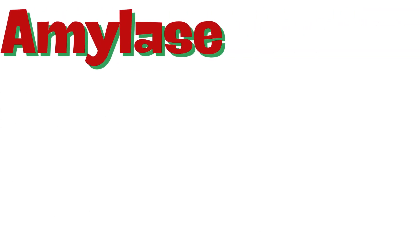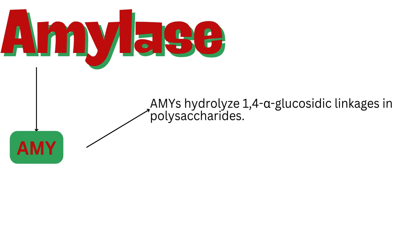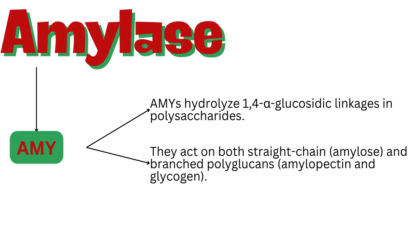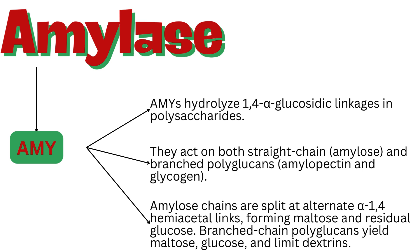The second enzyme is amylase, often abbreviated as AMY, which plays a vital role in breaking down carbohydrates. Amylases hydrolyze 1,4-alpha-glucosidic linkages in polysaccharides, acting on both straight-chain amylose and branched polyglucans — amylopectin and glycogen. Amylose chains are split at alternate alpha-1,4 hemiacetal links, forming maltose and residual glucose. Branched-chain polyglucans yield maltose, glucose, and limit dextrins.